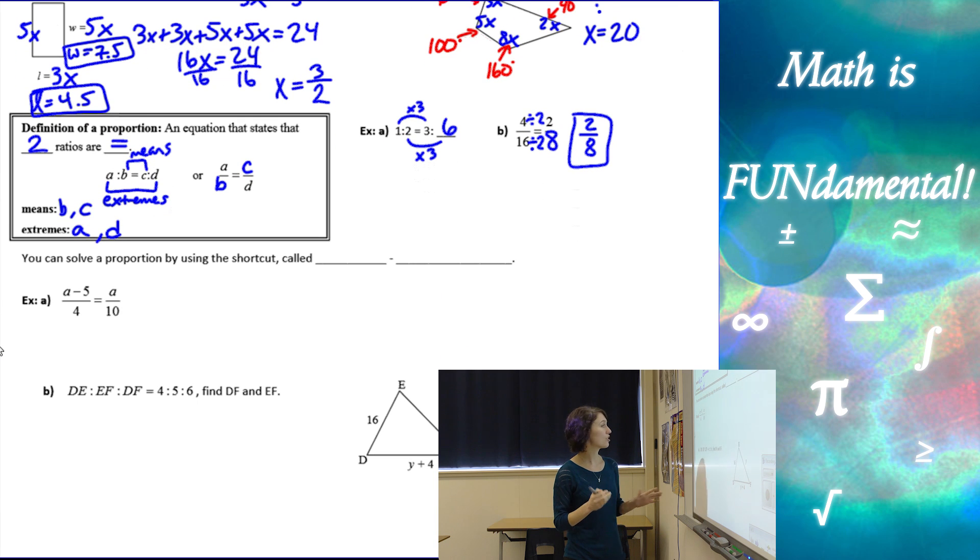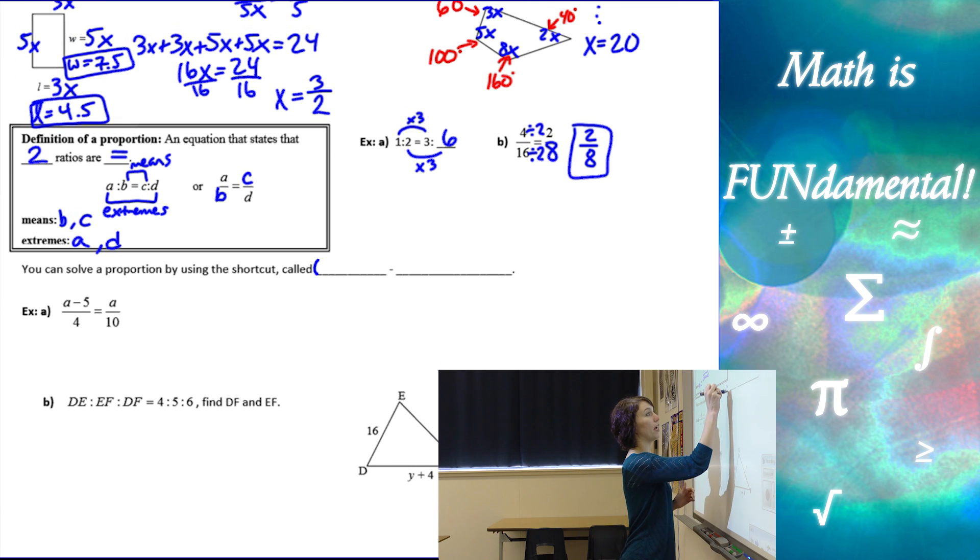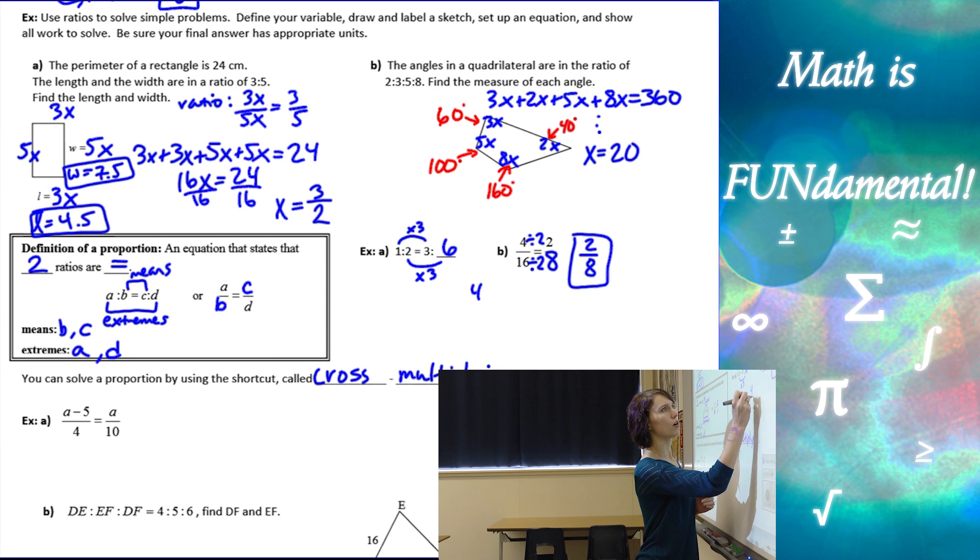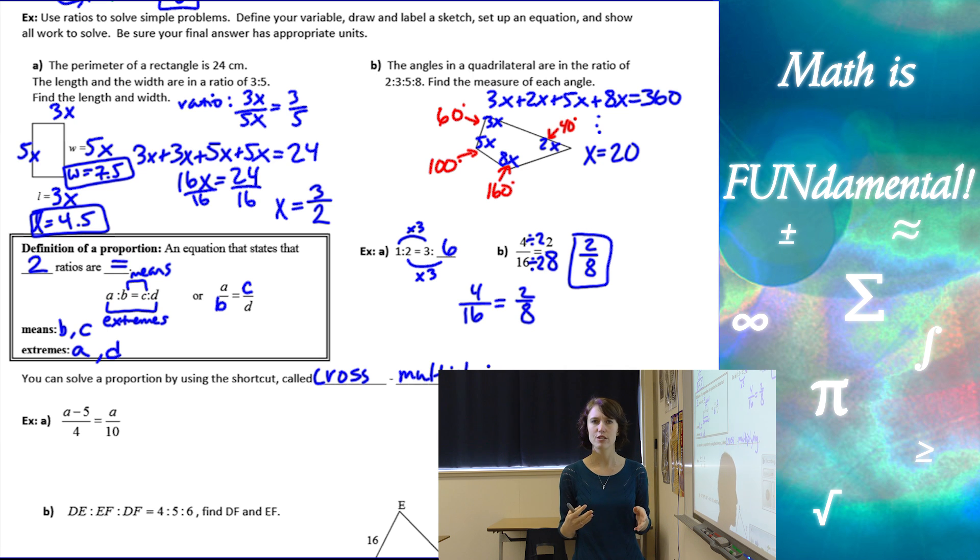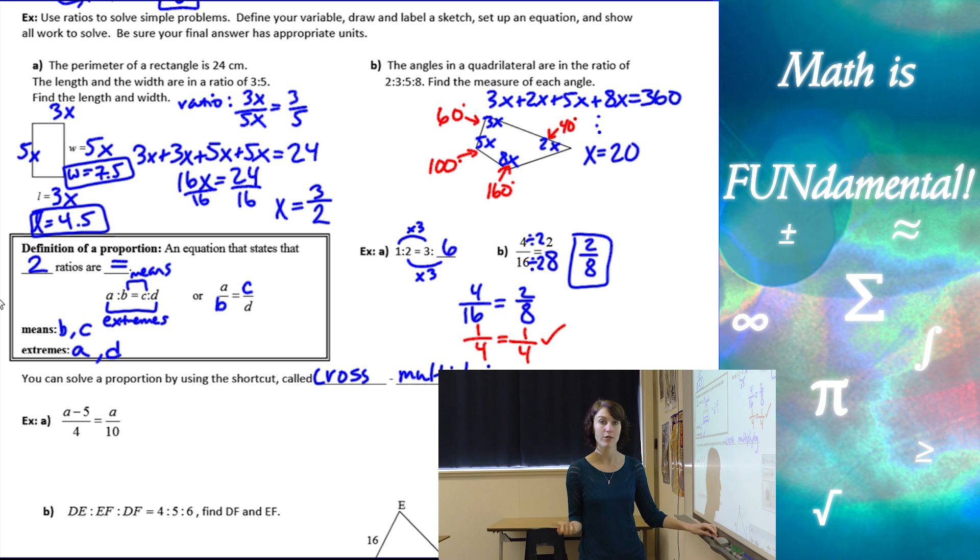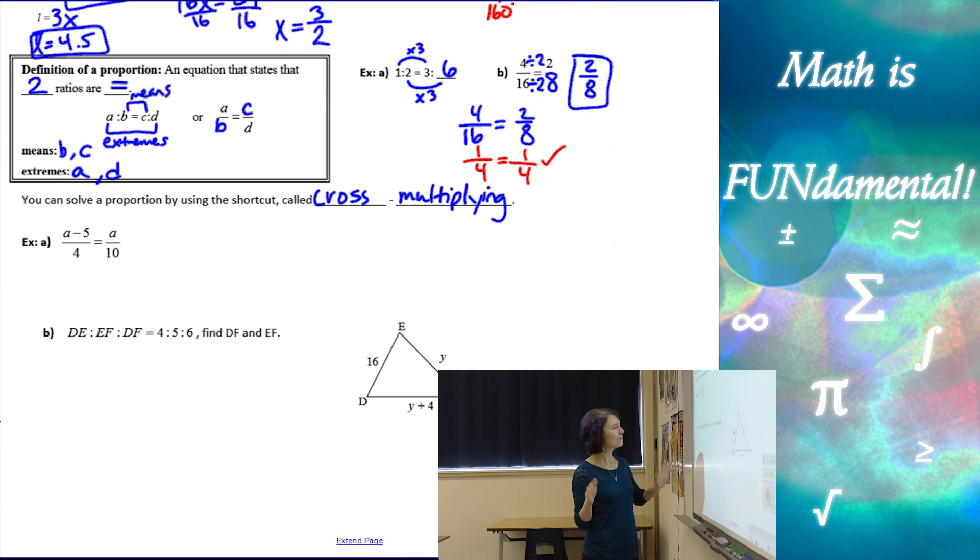You can solve a proportion by using the shortcut called cross multiplying. Before I go into this, I want to back up just a second and explain a little bit more what proportions are doing. If I know that 4 over 16 equals 2 over 8, what I'm saying is that these fractions are equivalent to each other. 4 over 16 would reduce to 1 fourth, and 2 over 8 would also reduce to 1 fourth. So those two fractions are equivalent when reduced, and they're equivalent when they're not reduced, but it's a little difficult to see. That's kind of what we're doing when we're doing proportions.